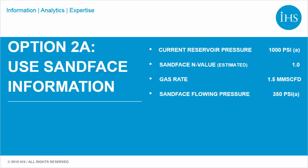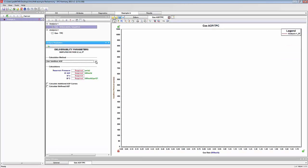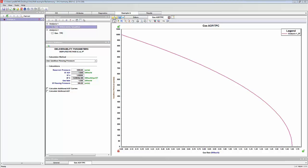The first method is to enter sand phase flowing pressure directly. Here is the data that we will enter. In Harmony, use the dropdown and change to use sand phase flowing pressure. Then enter the data. Once the data is entered, the AOF curve is drawn and can be used for nodal analysis.